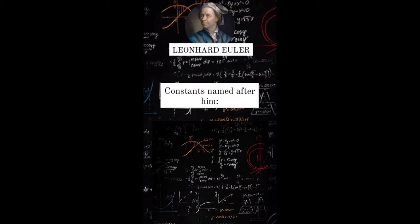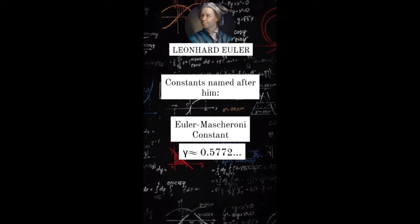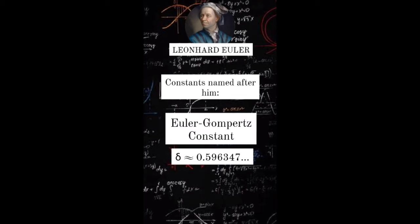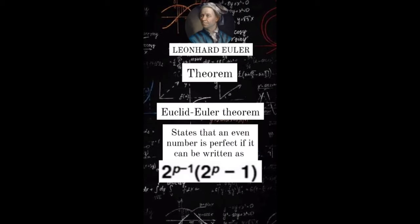Constants named after him include Euler's constant, the Euler-Mascheroni constant, and Euler-Gumpert's constant. Theorems include Euler's theorem and the Euclid-Euler theorem.